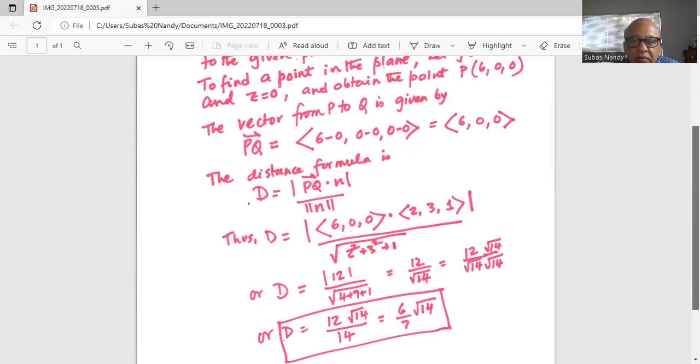So we have 12 divided by 14 multiplied by square root of 14, or if we take out the common factor of 2 between 12 and 14, 12 in the numerator, 14 in the denominator, we get 6 divided by 7 multiplied by square root of 14. That is the distance.